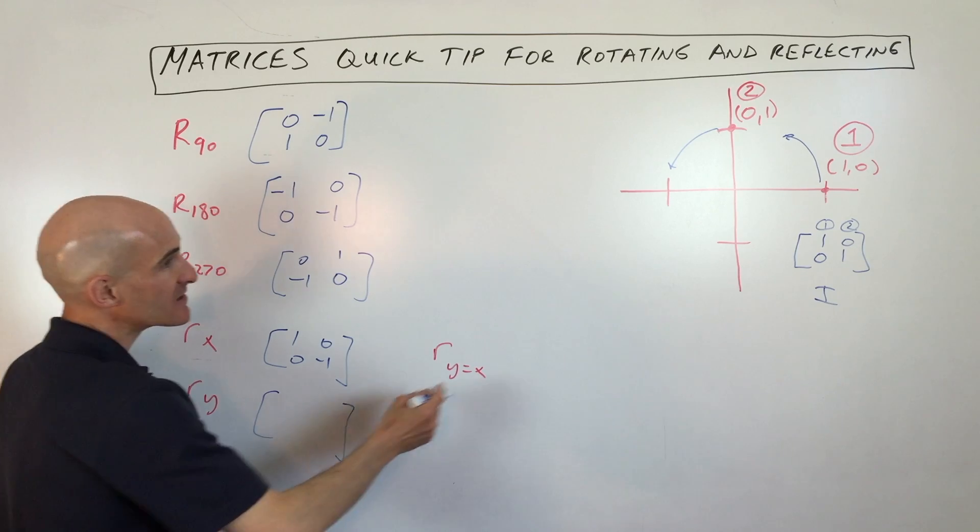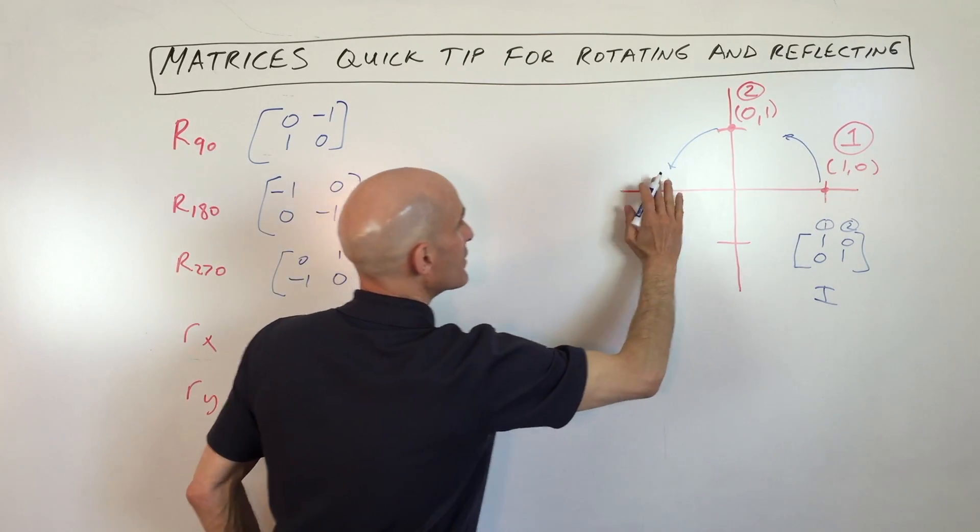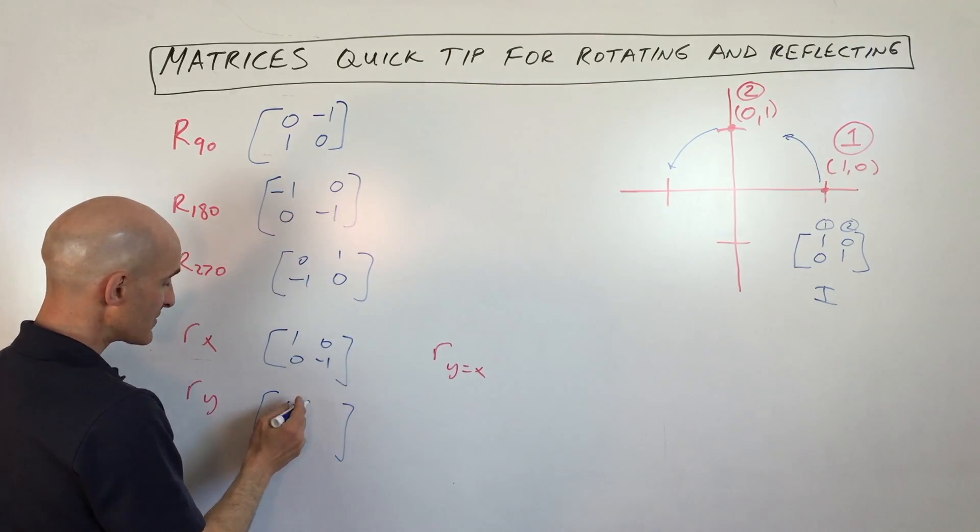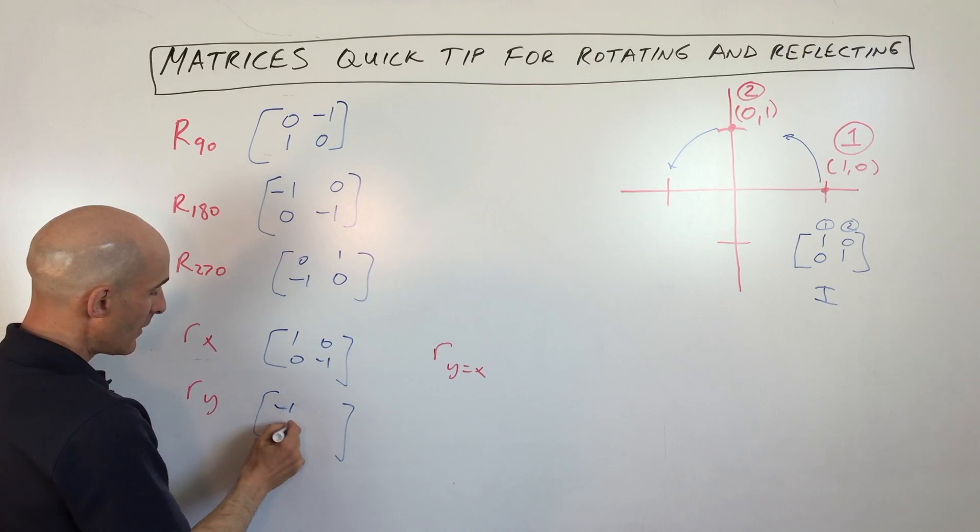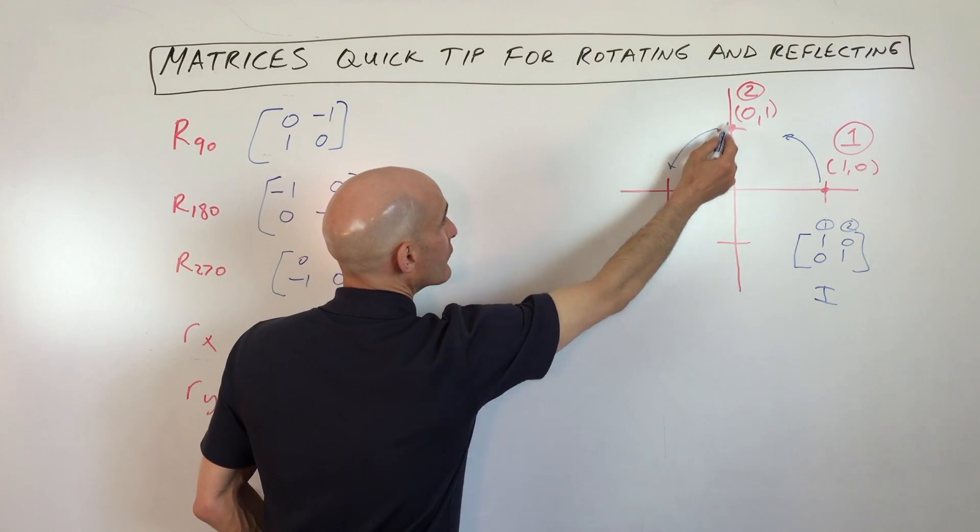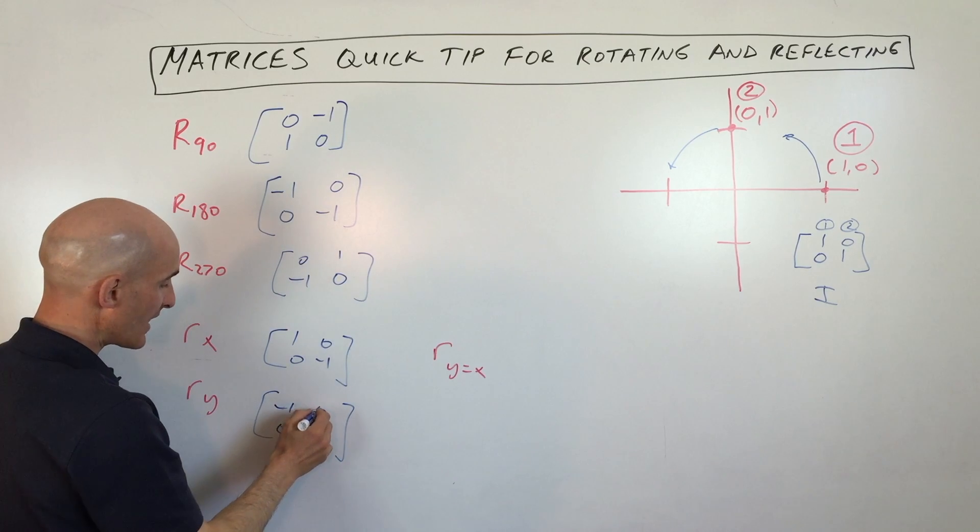If we reflect over the y-axis, this point is going to reflect over here. It's going to be at negative one, zero. And then this point is on the line of reflection, so it's going to stay where it's at, at zero, one.